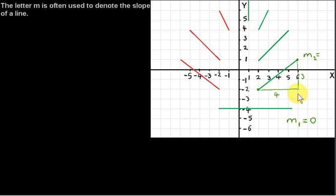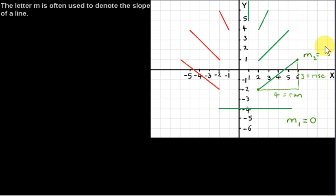Sometimes the horizontal distance is called a run, and the vertical distance is called a rise. To get the slope, we divide the rise by the run. So the rise is three, the run is four, so the slope of this line is three quarters.